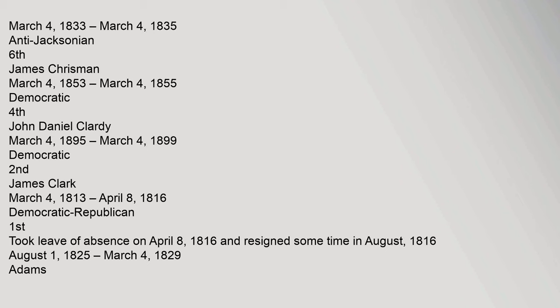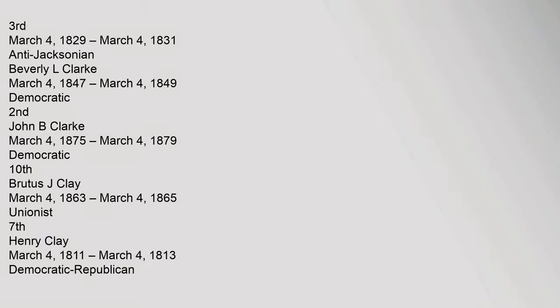James Clark, March 4, 1813 to April 8, 1816, Democratic Republican, 1st, took leave of absence April 8, 1816 and resigned some time in August 1816; August 1, 1825 to March 4, 1829, Adams, 3rd; March 4, 1829 to March 4, 1831, Anti-Jacksonian. Beverly L. Clark, March 4, 1847 to March 4, 1849, Democratic, 2nd. John B. Clark, March 4, 1875 to March 4, 1879, Democratic, 10th.